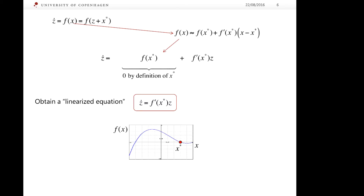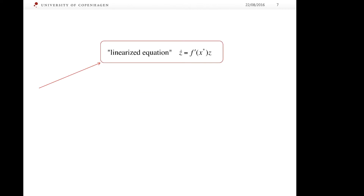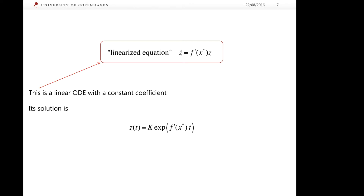The significance of the quantity f-prime at x star is that it represents the slope of the tangent straight line which goes through the fixed point — that is the geometrical meaning of the constant coefficient in the linearized equation. The linearized equation is a linear ordinary differential equation with a constant coefficient, which is exactly solvable.